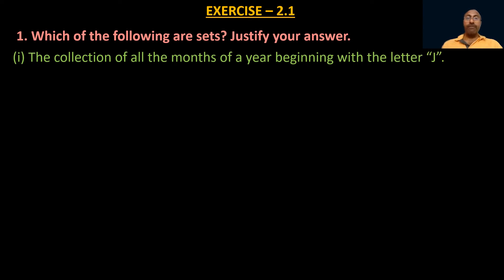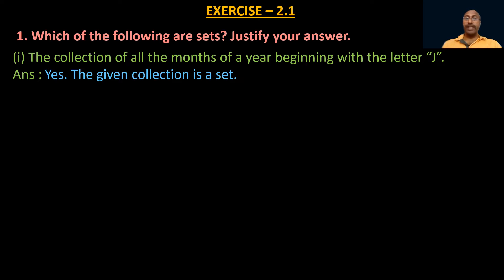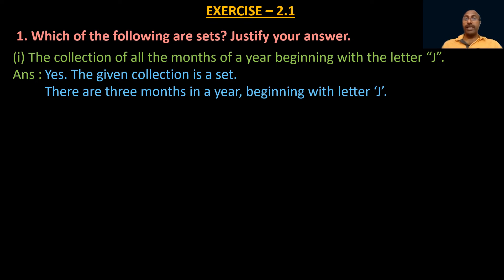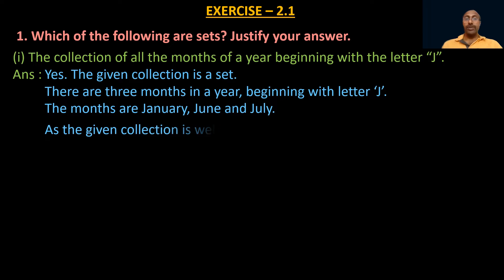First one: the collection of all the months of a year beginning with the letter J. What do you think — is it a set or not? We all know that the months January, June, and July begin with the letter J. So here the collection is well defined. Therefore, the given collection is a set, because there are exactly three months in a year beginning with the letter J.